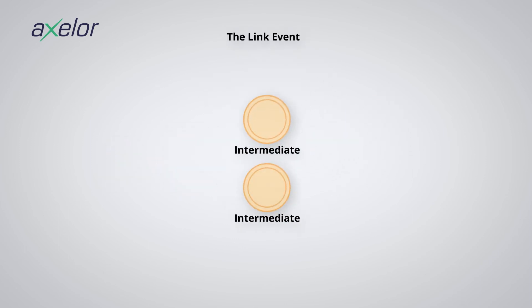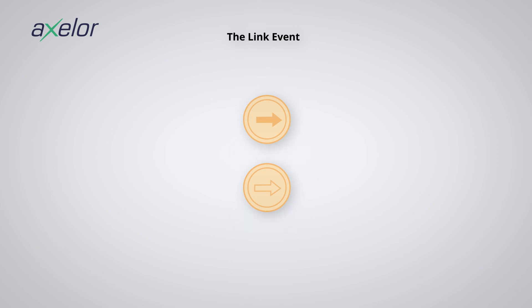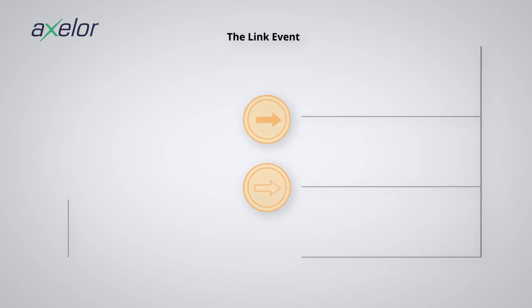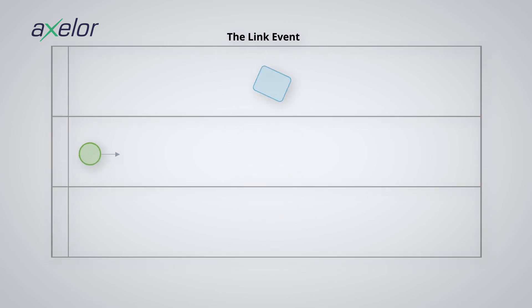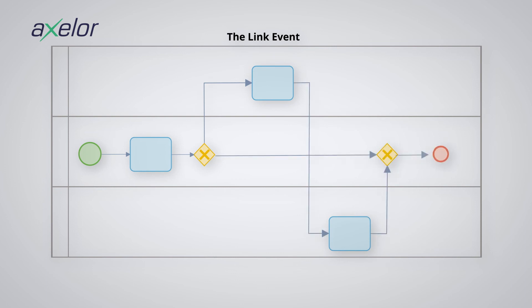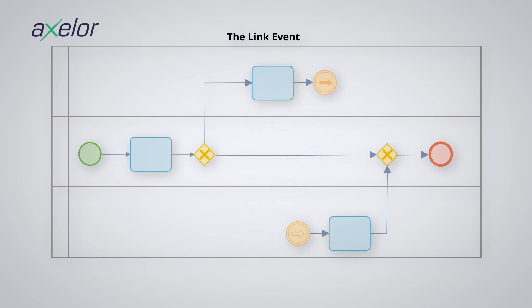The link event. These are events specific to intermediate events and represented by an arrow pictogram. These events are used in the design process to represent a continuity in the flow by avoiding crossing it. In this example of a process, three people are required to intervene for its good realization, but this design makes the flow overlap. In order to avoid this bad practice, it is necessary to use the link event. This design is equivalent to the first one as far as behavior is concerned, but it allows us to stay within the framework of good practices so the flows cannot overlap.